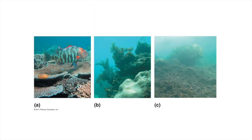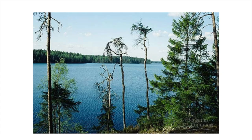Coral bleaching is shown here. Acidic precipitation can also disrupt the physiology of organisms such as these trees. The rain doesn't produce chemical burns, but the cumulative effect of altered pH over time can lead to life-threatening physiological disruption.